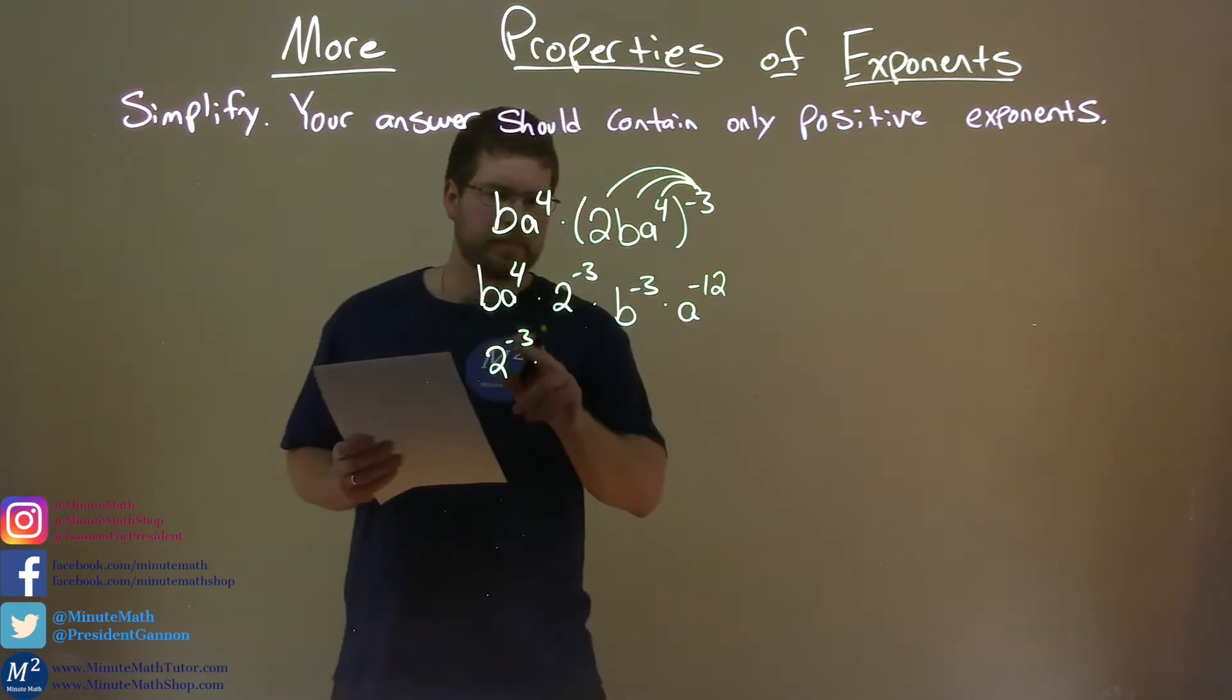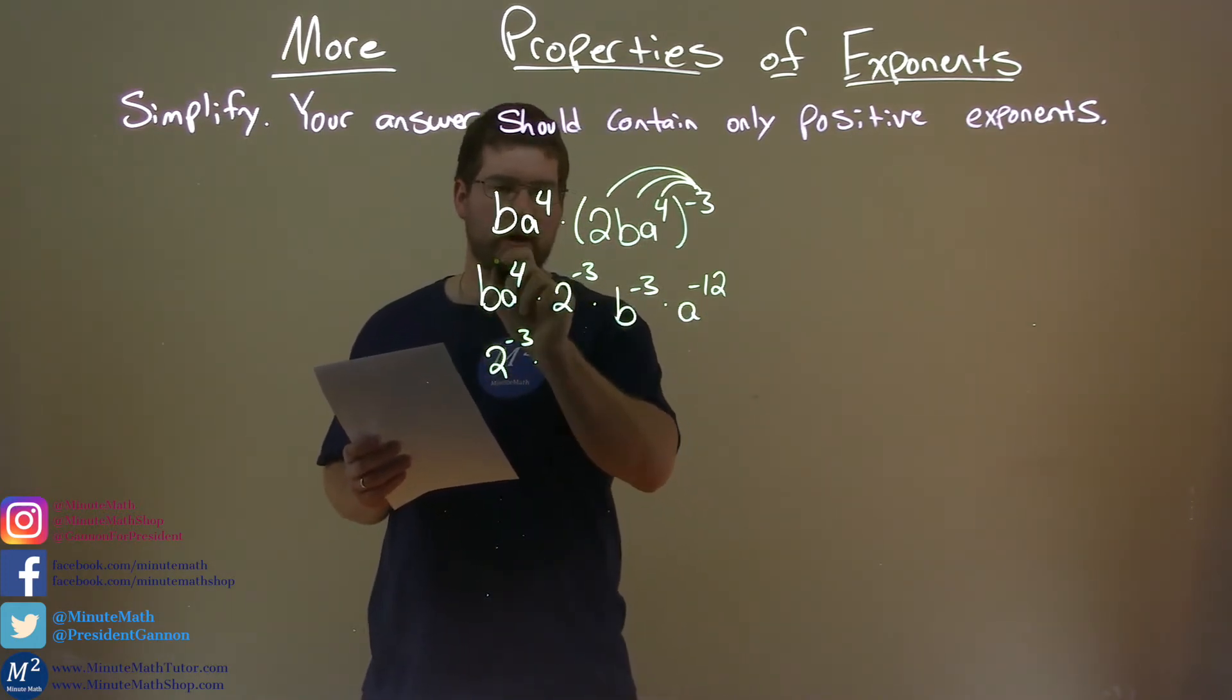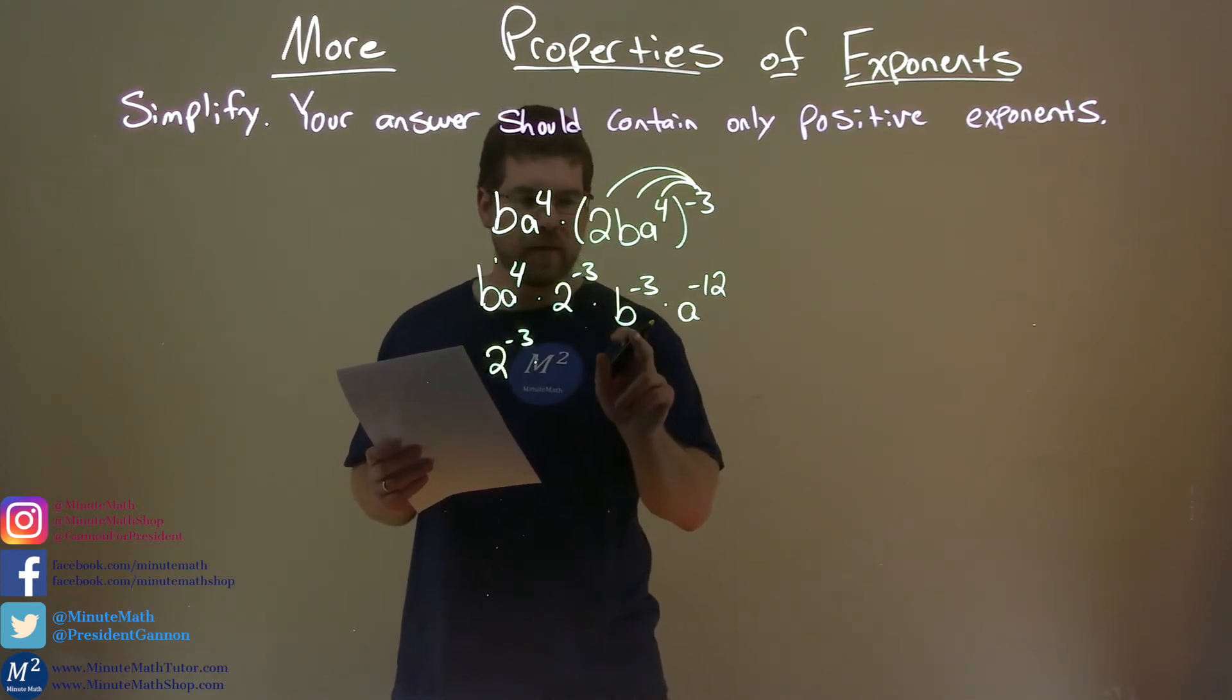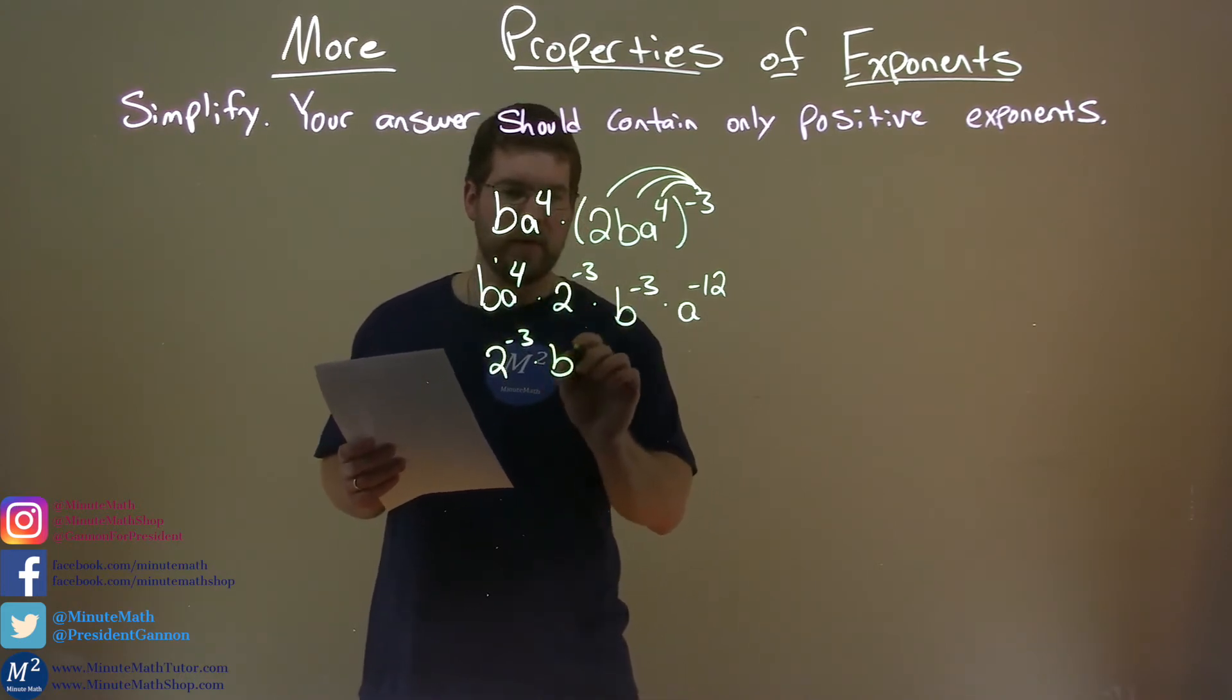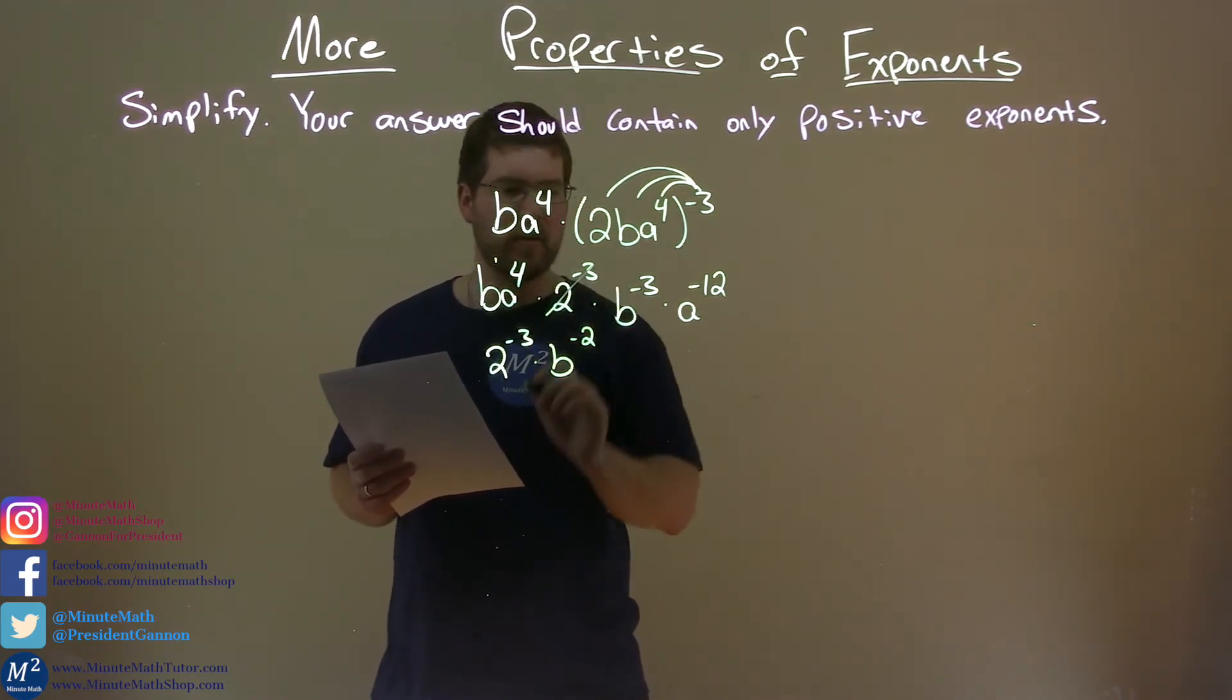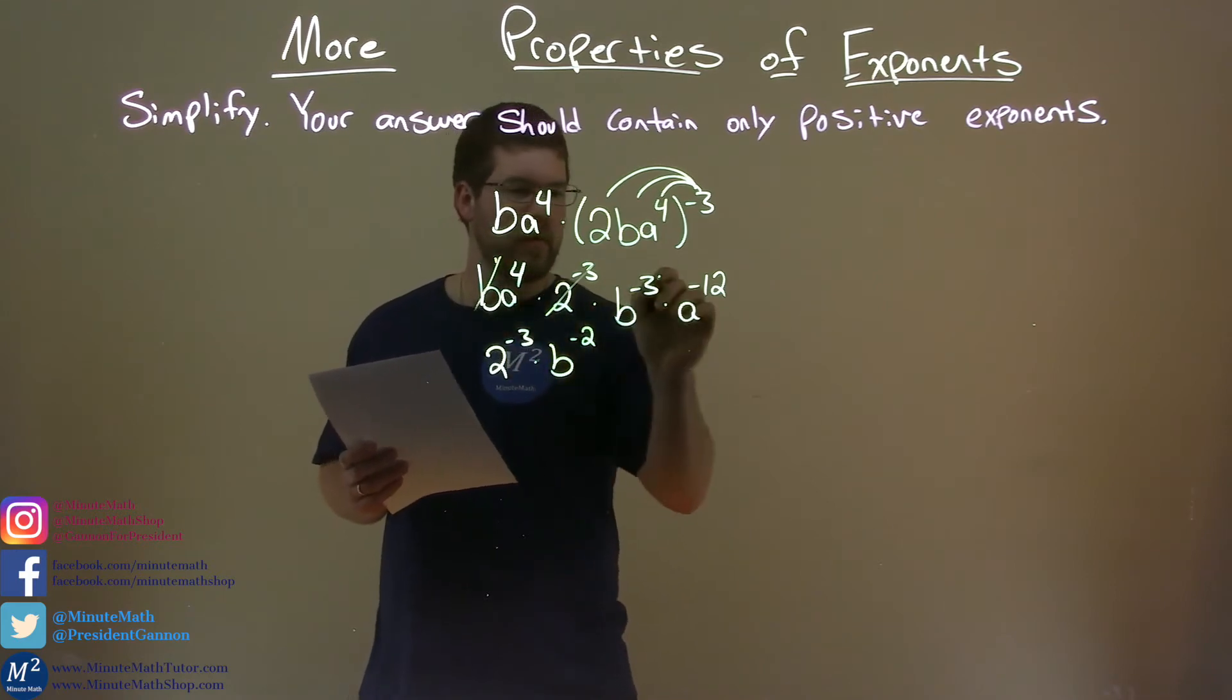And then, let's go with the Bs. We have B to the first power and B to the negative third power. Multiply them together, we add the exponents. We have B to the negative 2 power. 1 minus 3, negative 2. So we've got this 2 to the negative third we brought over. We've dealt with the Bs.